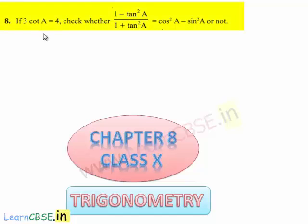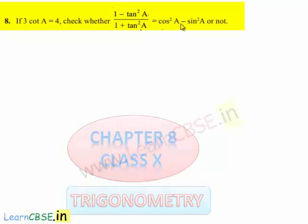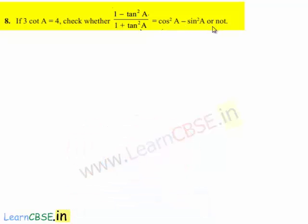Moving on to the 8th question: if 3 cot a is equal to 4, check whether (1 minus tan square a) by (1 plus tan square a) is equal to cos square a minus sin square a or not.